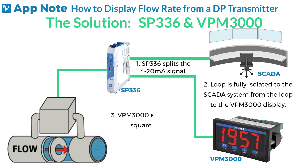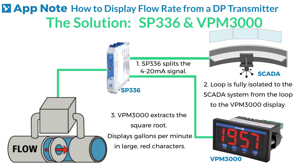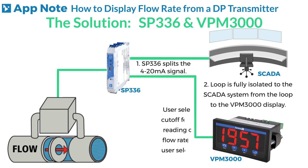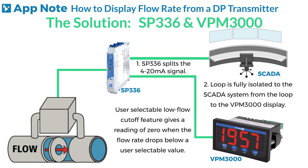The VPM3000 panel meter will extract the square root from the 4 to 20 milliamp signal and display the gallons per minute in large bright red characters. The user-selectable low flow cutoff feature gives a reading of zero when the flow rate drops below a user-selectable value.